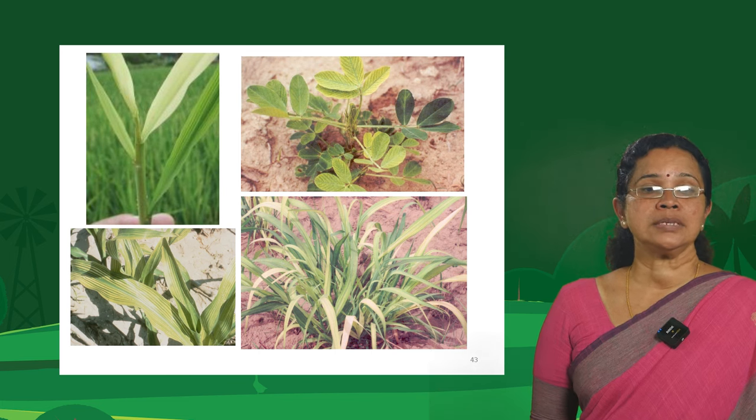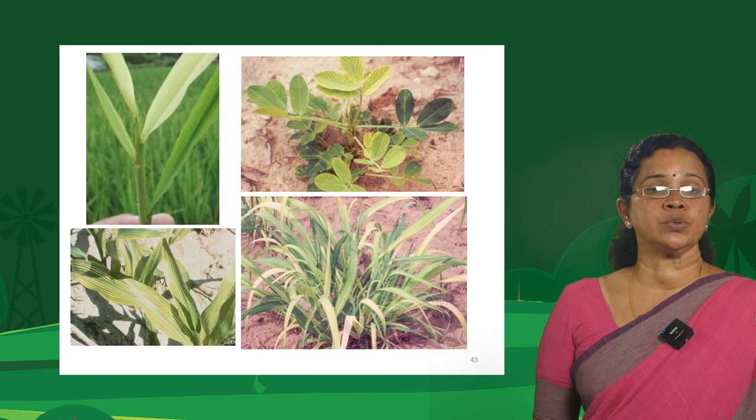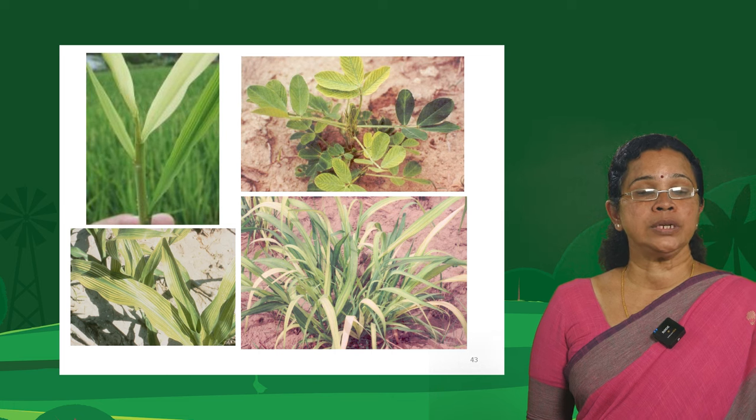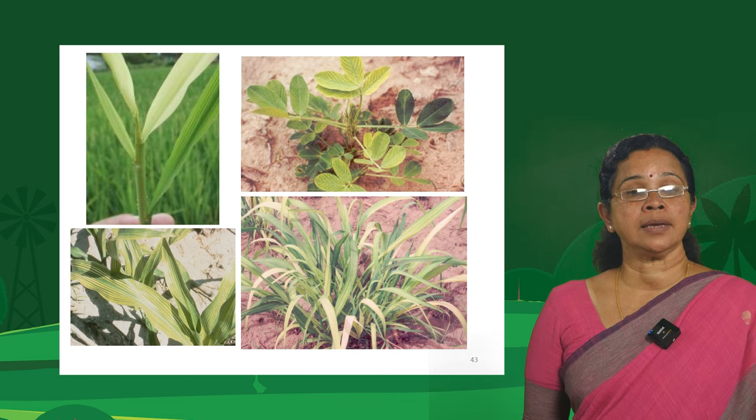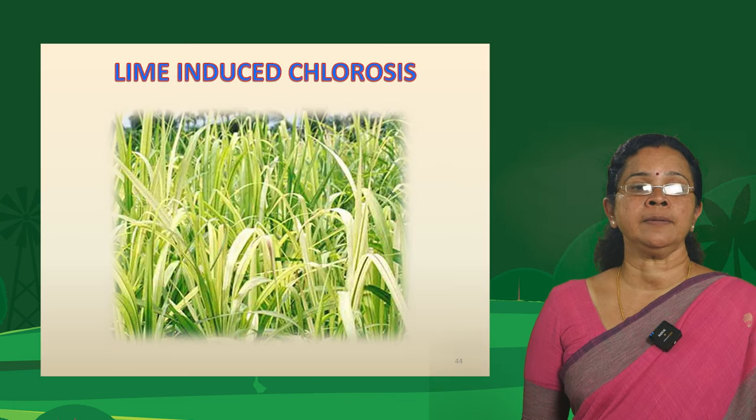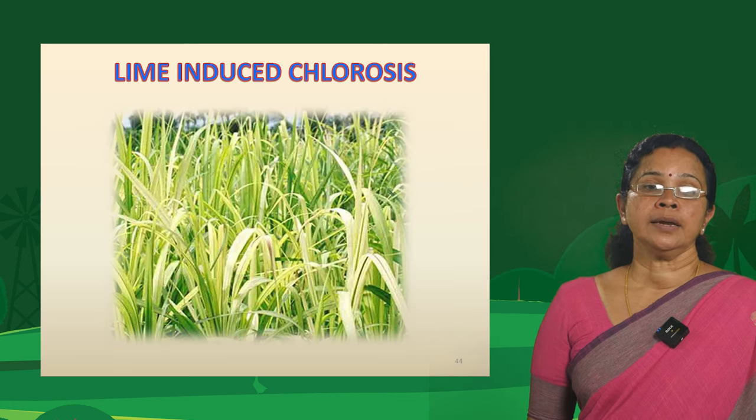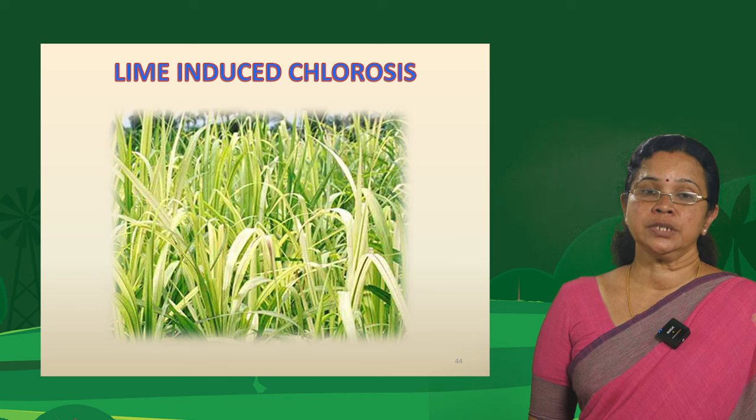Lime-induced chlorosis is usually seen in the case of sugarcane, and it is nothing but iron deficiency caused by the alkaline conditions produced by lime application.